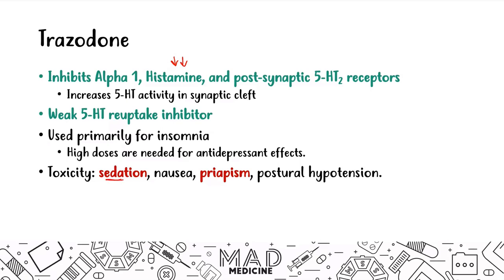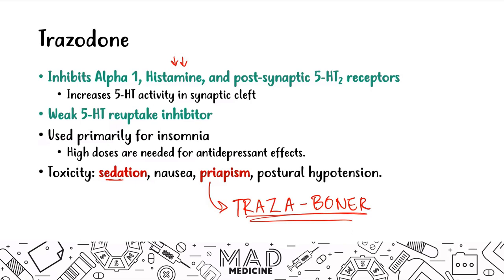Trazodone toxicity includes sedation, nausea, and priapism. Priapism is very important and highly tested — a useful mnemonic is to call trazodone 'trazoboner' because it can cause an erection when one shouldn't occur. Postural hypotension also occurs due to alpha-1 inhibition. The main takeaway: trazodone increases serotonin (5-HT), but watch out for sedation and priapism.